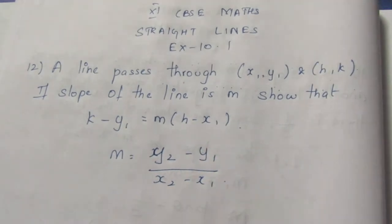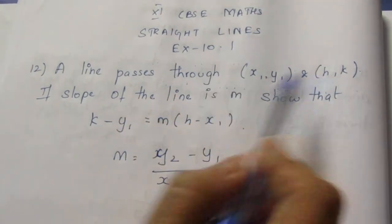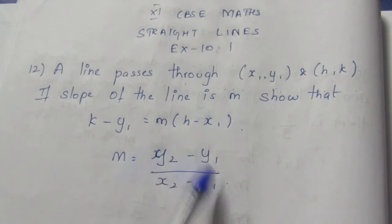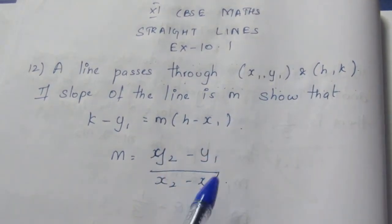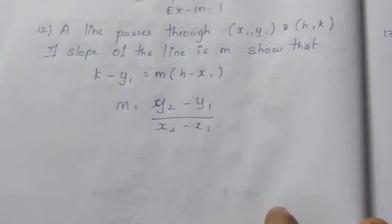It is quite easy sum. They have given the points, they have given the slope to be m. We can directly substitute the values here and we can prove it.